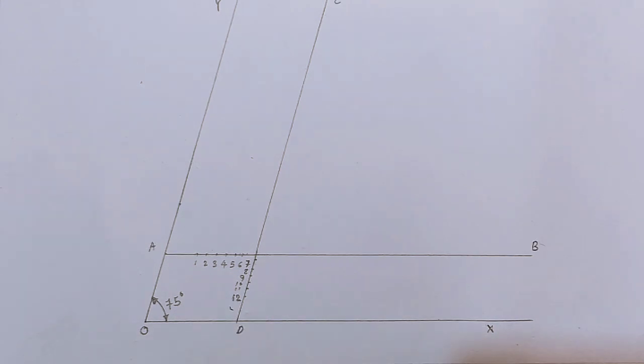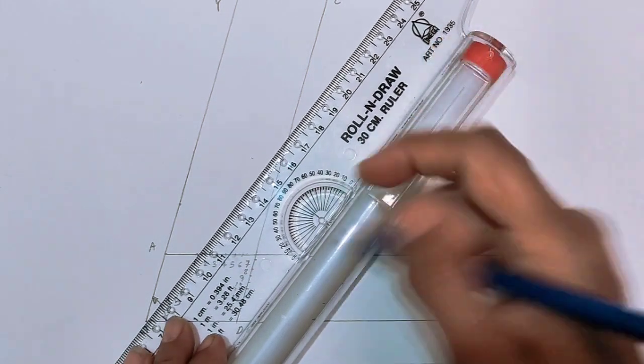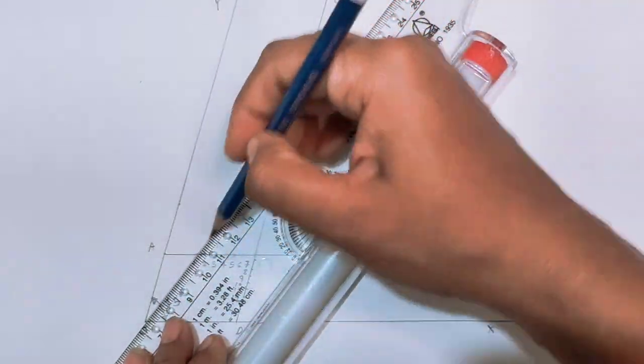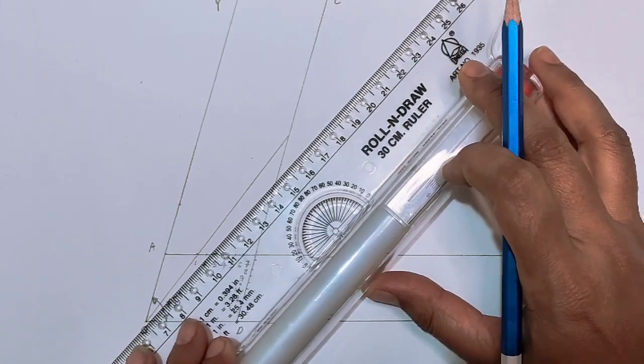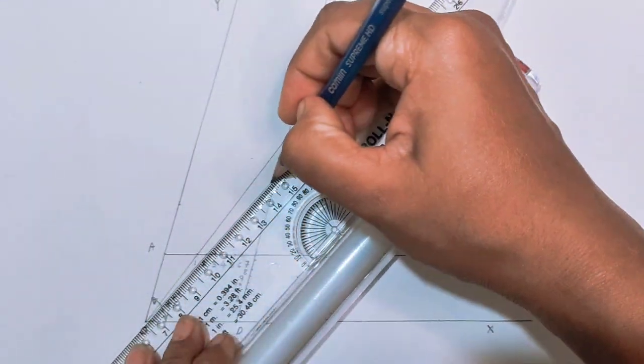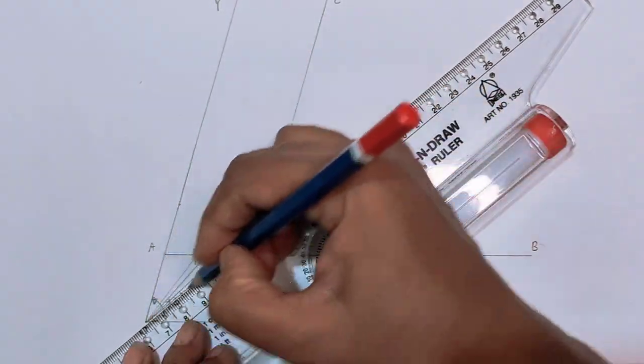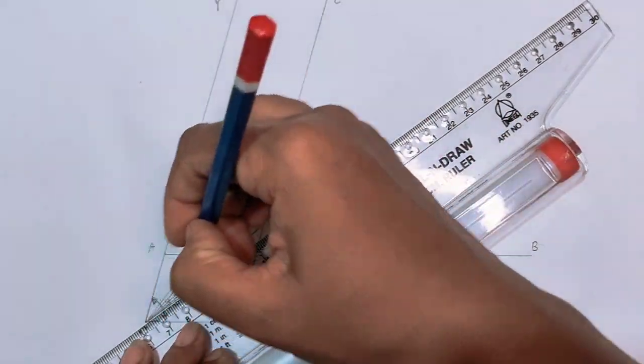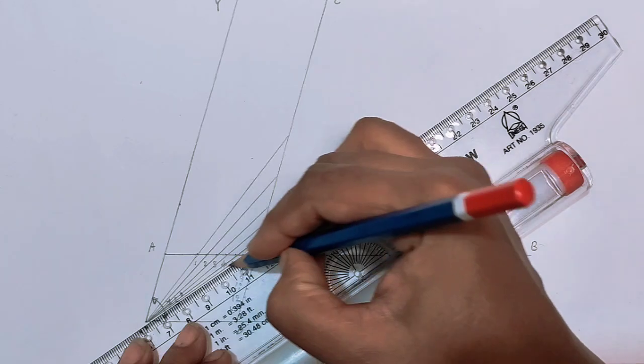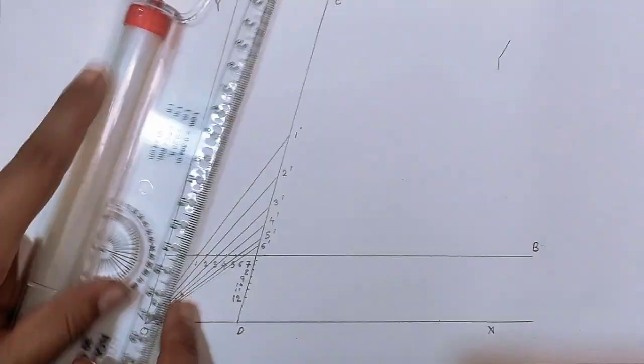Next step, draw a line passing through O1 and extend that line up to CD line. Again, draw a line passing through O2 and extend up to CD, and repeat the same procedure for points 3, 4, 5, 6.